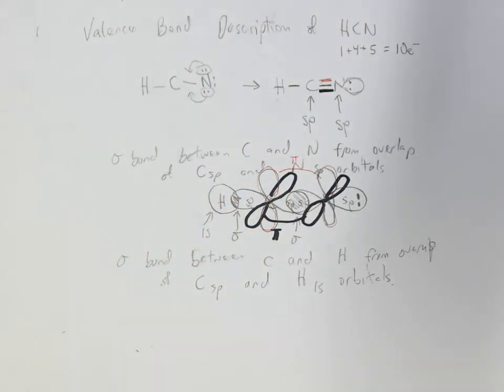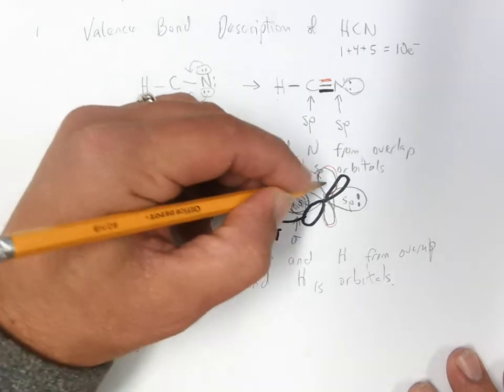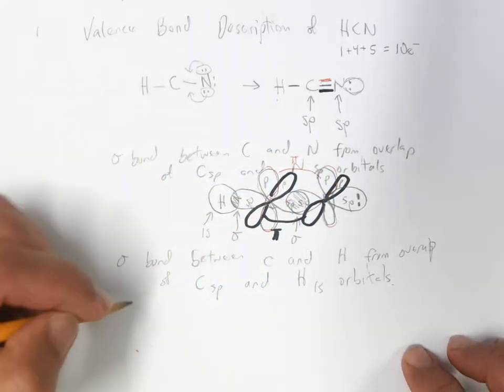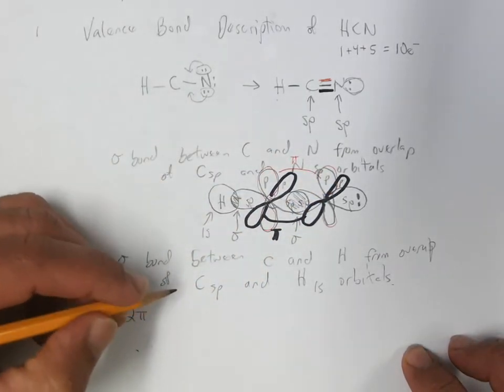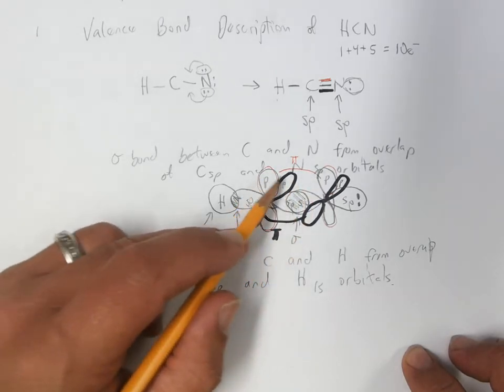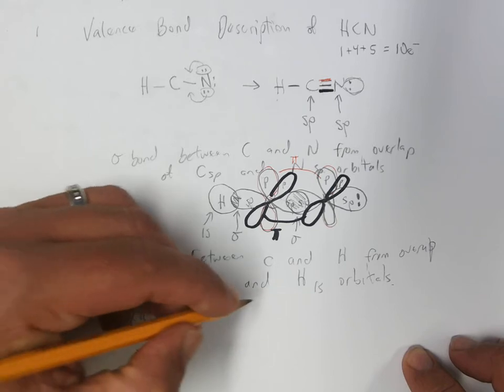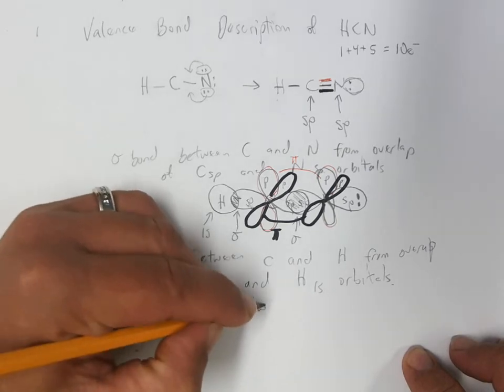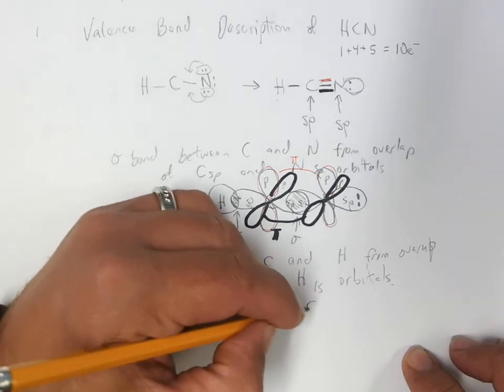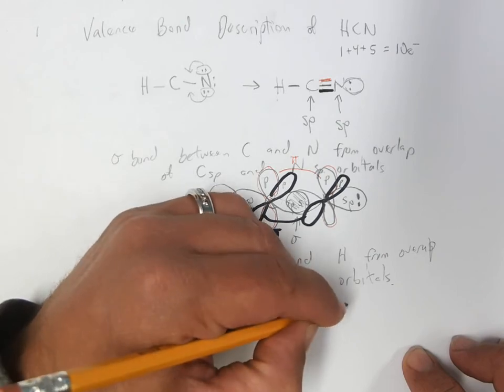So it really stands out that we have two pi bonds between carbon and nitrogen. So these p orbitals, so we have, go ahead and overlap with their parallel neighbors. So we have two pi bonds between carbon and p orbitals.